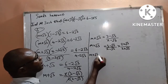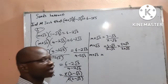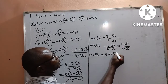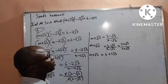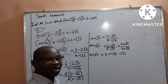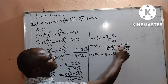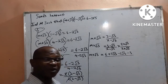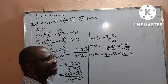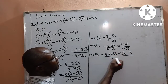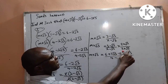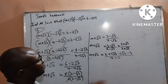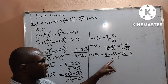Rationalizing, I multiply numerator and denominator by the conjugate 2 plus root 3. At the numerator: 3 times 2 gives me 6, 3 times root 3 gives me 3 root 3, minus root 3 times 2 gives me minus 2 root 3, and minus root 3 times plus root 3 gives me minus 3. At the denominator, applying difference of two squares: 2 times 2 gives me 4, and minus root 3 times plus root 3 gives me minus 3. So 4 minus 3 is 1.